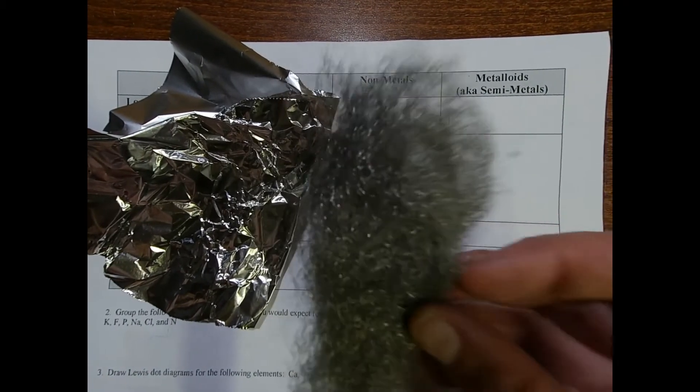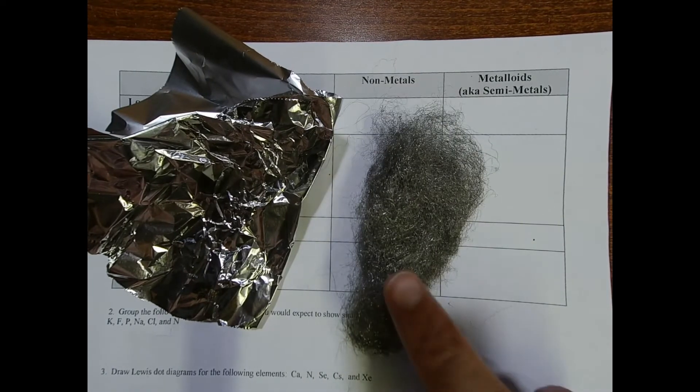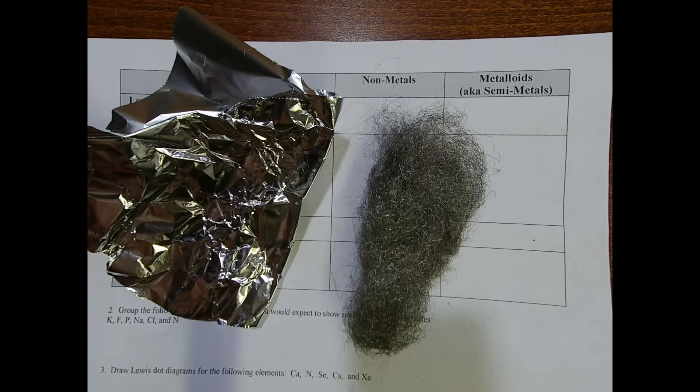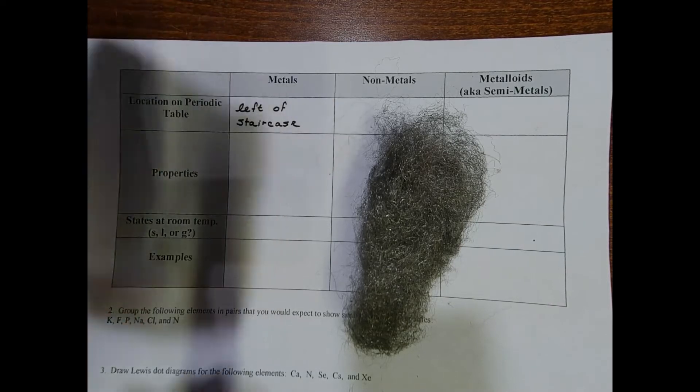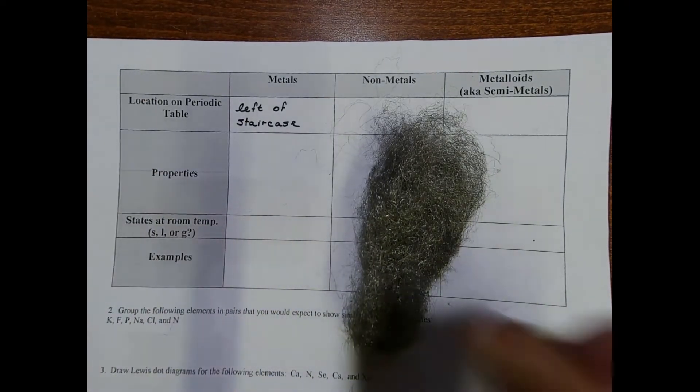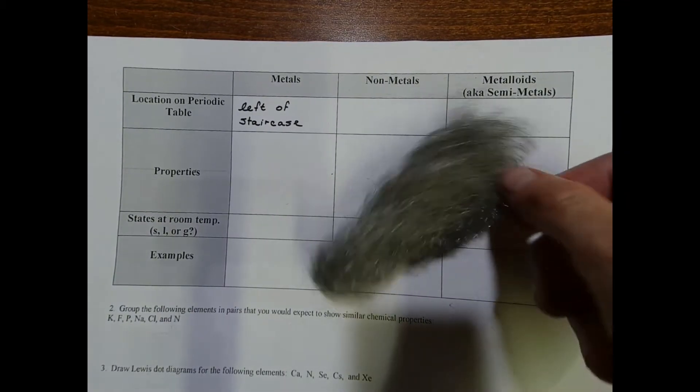It's called steel wool, but it's an example of the element iron. What do these both have in common? Well, first off they're bendable, and the word for bendable when we talk about metals is malleable.